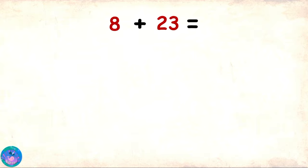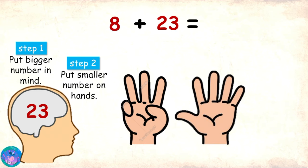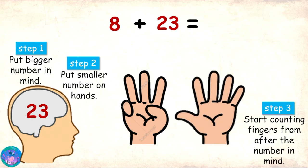23 is the bigger number. So, I will put that in my mind. 8 is the smaller number. So, I will raise 8 fingers. Then, start counting after 23.